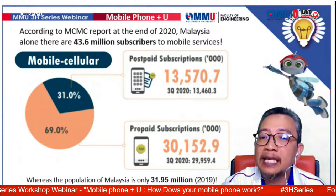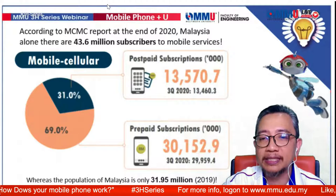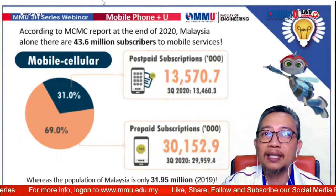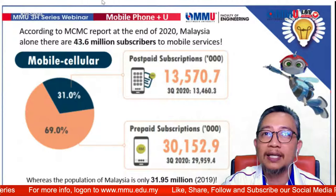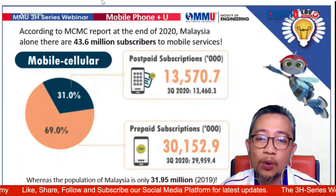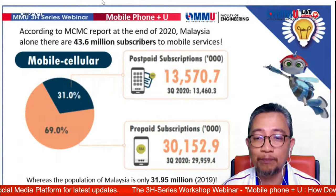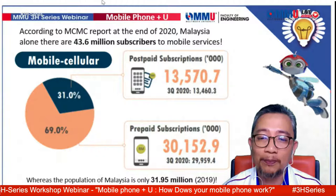Even in Malaysia alone, according to MCMC's report at the end of 2020, Malaysians have about 43.6 million subscribers to mobile services — mostly prepaid, with about 31% postpaid. This far exceeds Malaysia's total population of about 31.95 million. This is because most people actually own more than one phone, which is why the number of mobile phones exceeds the human population in this country.